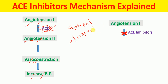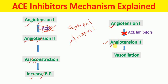When ACE inhibitors such as captopril are used, the conversion of angiotensin 1 into angiotensin 2 is blocked. So angiotensin 1 cannot be converted into angiotensin 2, which means there will not be vasoconstriction. Instead, there will be vasodilation, because angiotensin 2 causes vasoconstriction — and when its production from angiotensin 1 is blocked, that leads to vasodilation.